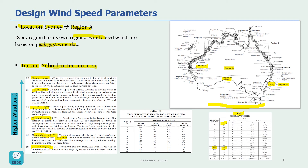Now that I know my terrain category, I can look at Table 4.1. Based on different heights and different terrain categories, we can get another factor called Mz,cat, which is the height and terrain multiplier used to calculate our design wind pressure. For example, for terrain category three with a building height of 50 meters, our factor would be 1.05. As you can see, the taller the building gets the higher the factor, and terrain category one gives higher factors than terrain category four.